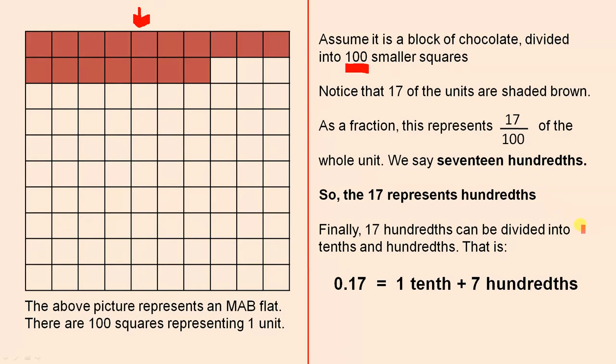Finally, seventeen hundredths can be divided into tenths and hundredths. That is, the 0.17, which is seventeen hundredths, can be divided into one tenth, which is this one, and seven hundredths, which is this one.